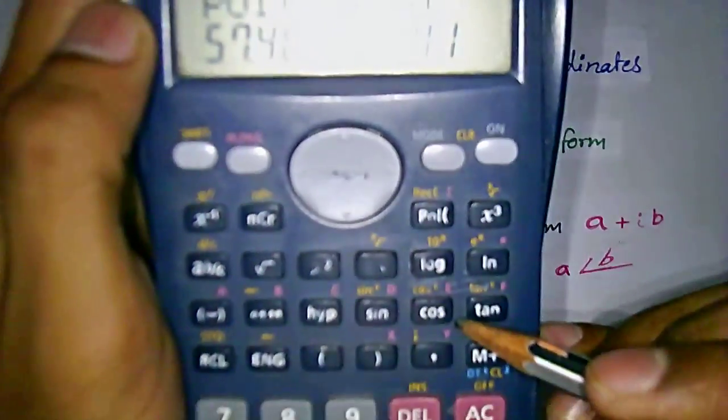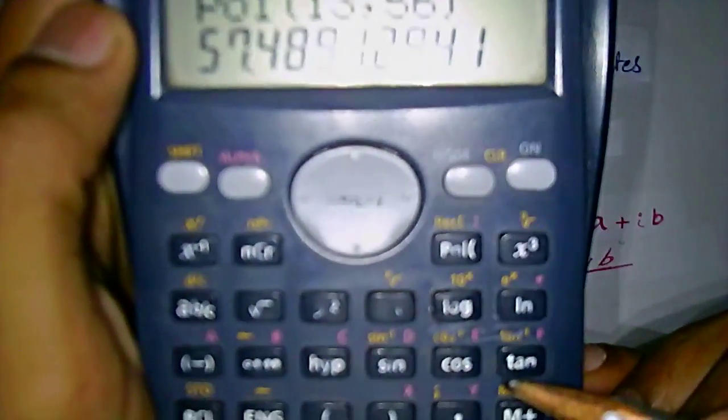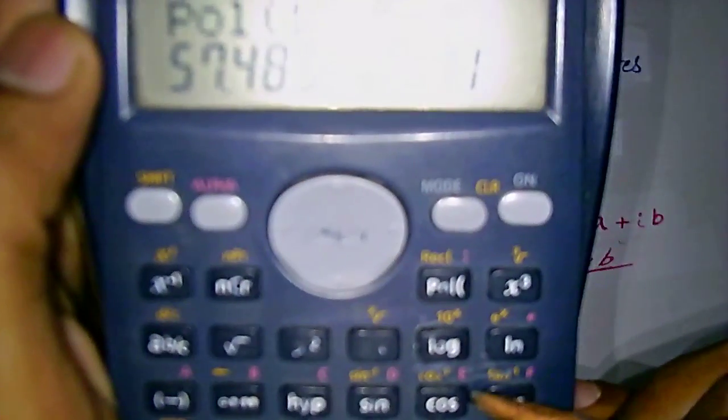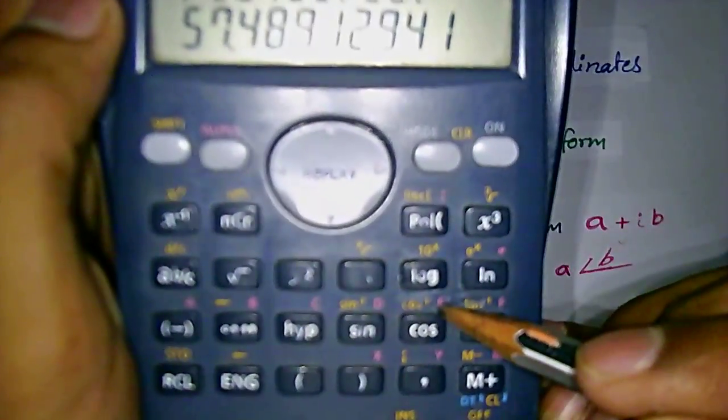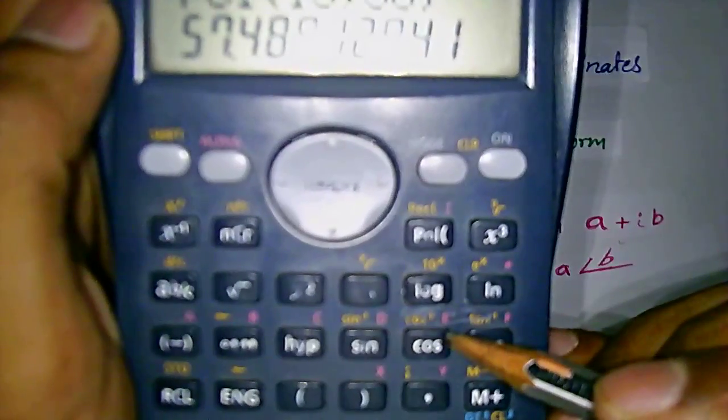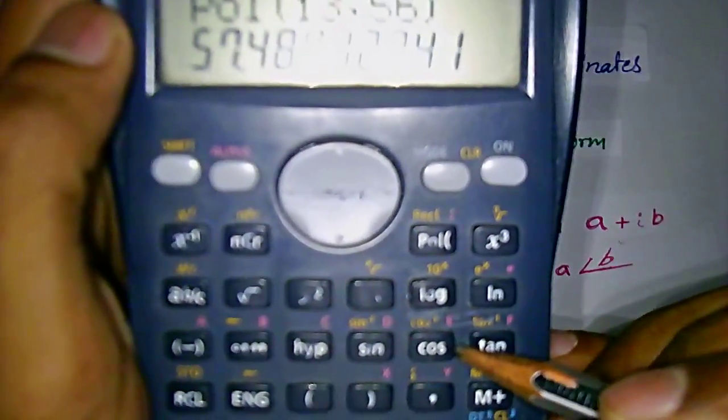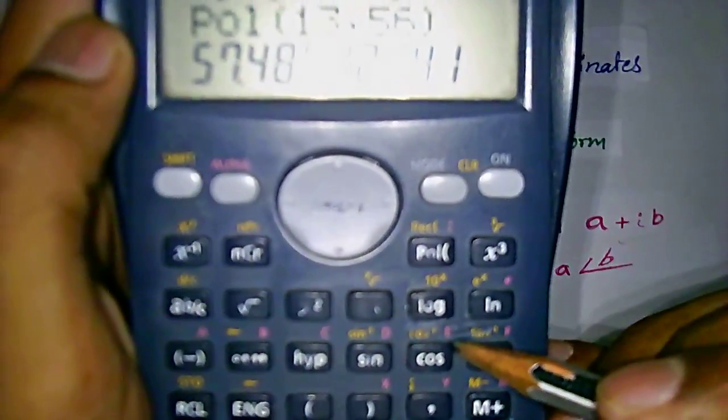E - hope you can see this E value here, this one - that is above the COS button, which we should use by pressing the alpha button.